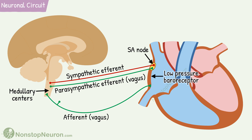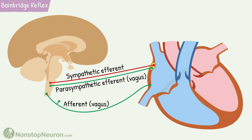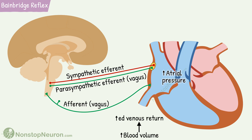These efferent fibers mainly supply the SA node. This reflex is initiated when atrial pressure increases — for example, when increased blood volume increases the venous return. The atrial pressure increases, and the increased pressure causes the stretching of the baroreceptors in the atrial wall, so firing from them increases.